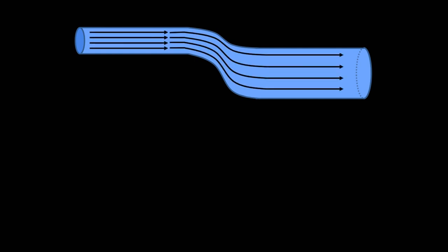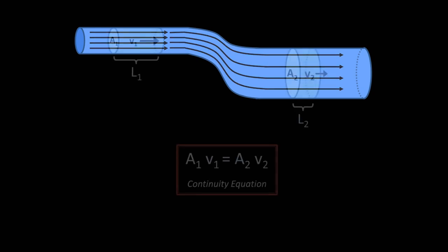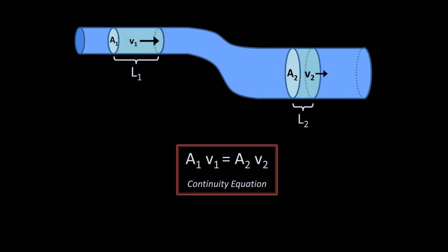In the last lesson on the continuity equation, we started with a fluid conduit of variable cross-sectional area in which some non-compressible liquid was traveling left to right. And we looked at how the product of the cross-sectional area and the velocity in one segment must be equal to the product of the cross-sectional area and the velocity in another segment.